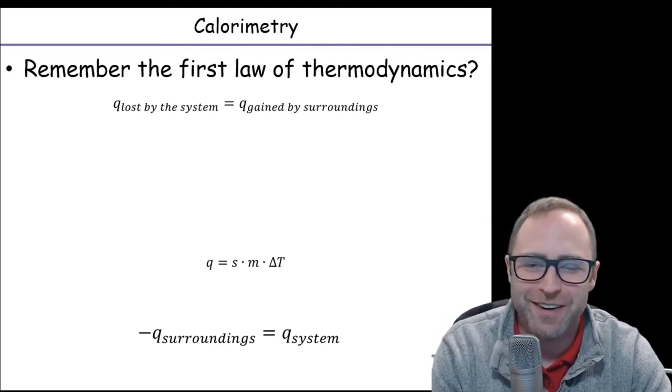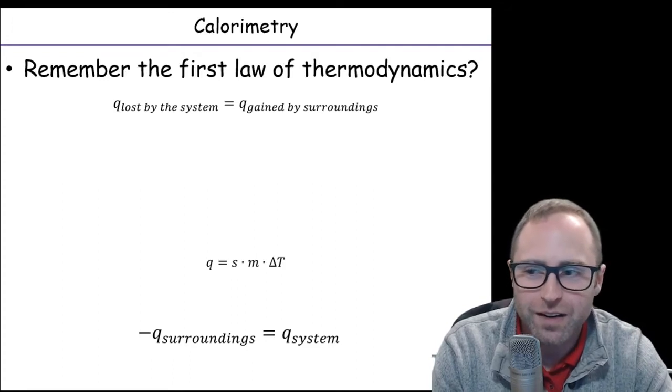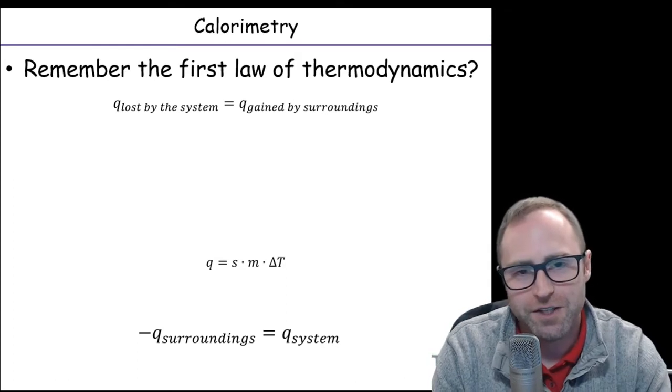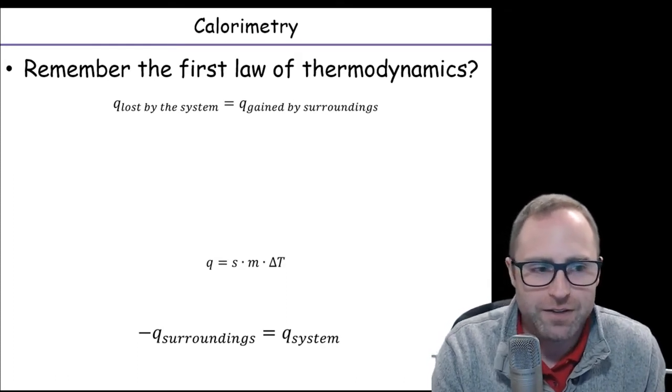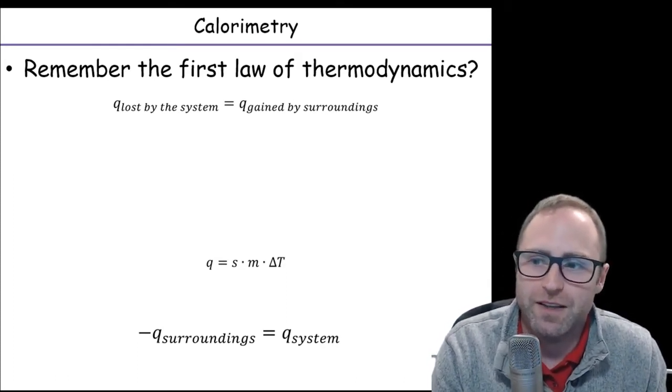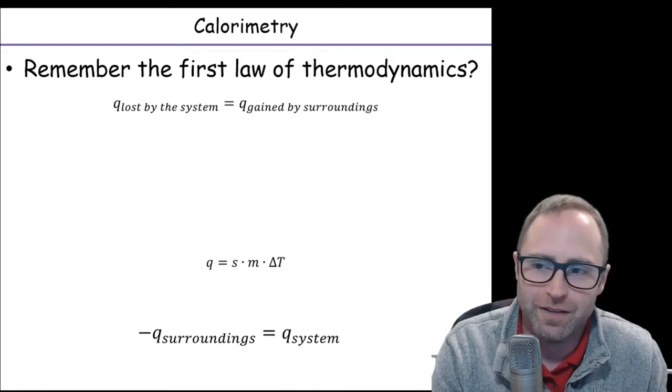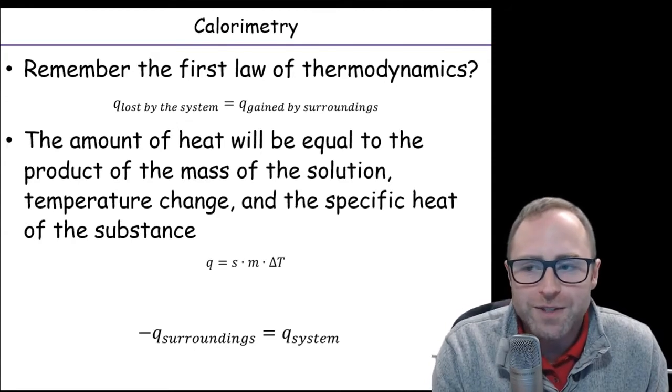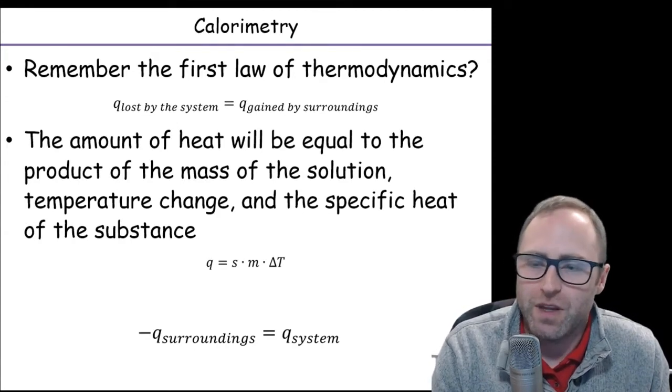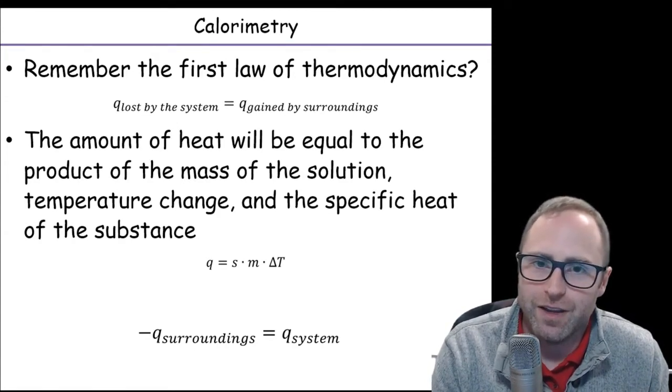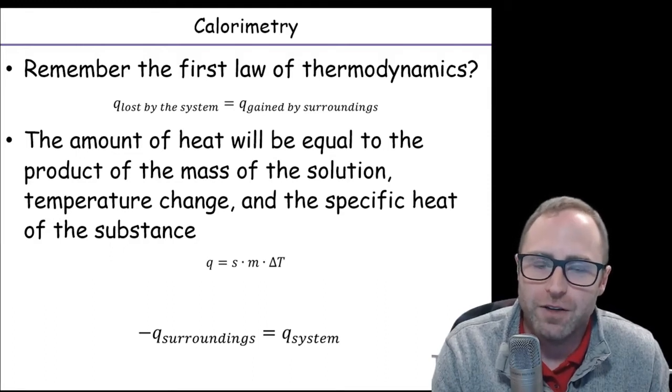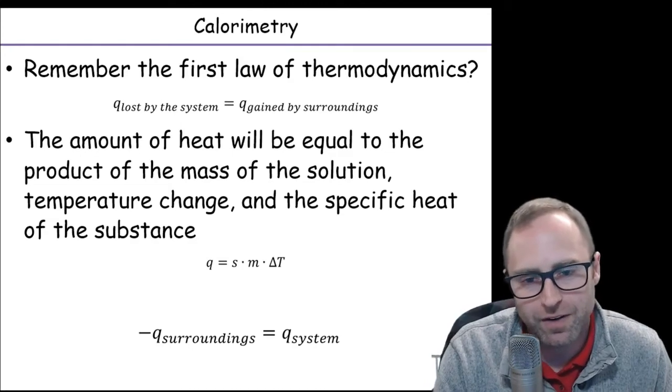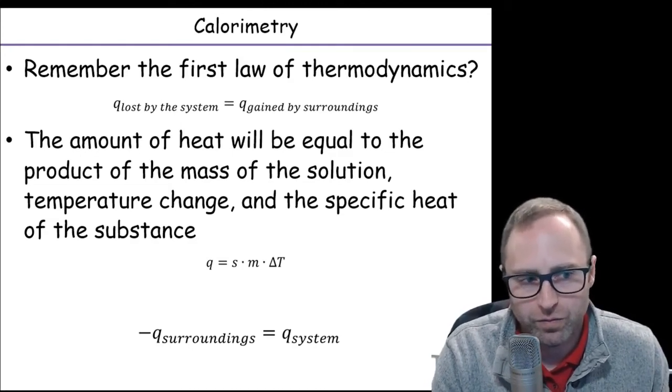Anyways, first law of thermodynamics. The energy lost by the system is going to be equal to the energy gained by the surroundings, or vice versa. So we could say the energy gained by the system is going to be equal to that lost by the surroundings. We're going to use that in calorimetry. So basically, we can think, okay, if we can measure either the change in energy in either the surroundings or in the system, we can figure out what's happening with the other one.